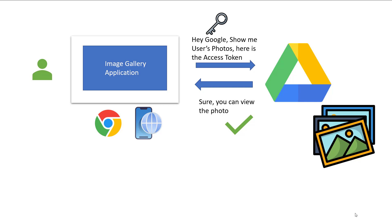Once the Google server receives this access token, it verifies whether it's a valid token — one generated by the Google server itself — and if confirmed, it grants access to the photos. In this way, we provide only limited access so the image gallery application can just view our photos. If required, we can also revoke the application's access by changing the settings in our Google account. This is a high-level overview of how the OAuth protocol works. In the next section, we'll look at commonly used OAuth terminology.